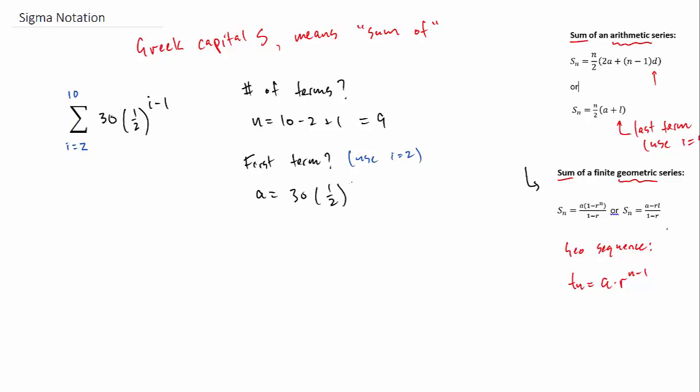And then we'll find the first term. So we'll plug in i equals 2. And be careful with BEDMAS. We end up with a first term of 15.